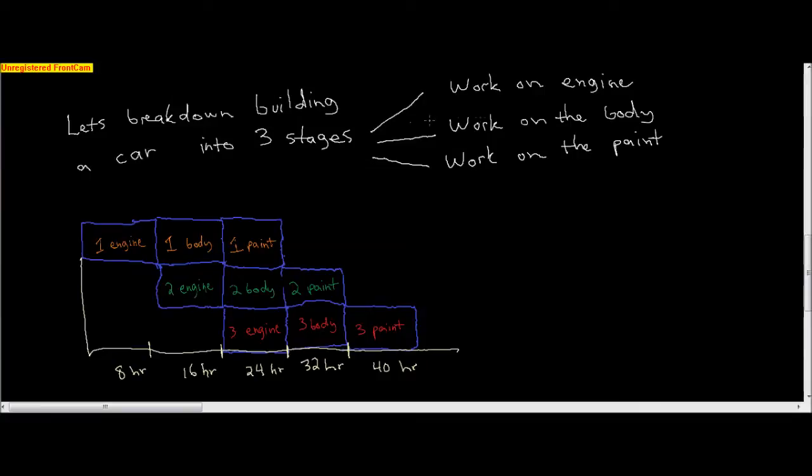Let's break it down into three stages: working on the engine, working on the body, and working on the paint. At time one, we have a crew working on the engine of the first car. At time two, a different crew will be working on the body, so the crew that was working on the engine for car one can now work on the engine for car two. At time three, a different crew can be working on the paint for car one, second crew on the body for car two, and the engine crew can start on the third car.